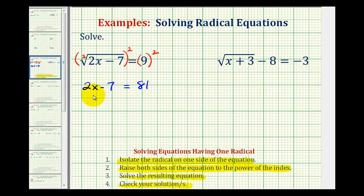And now we'll solve this basic two-step linear equation and then check our solution. So the next step would be to add 7 on both sides. So we have 2x equals 88. Divide both sides by 2, and we have x equals 44.